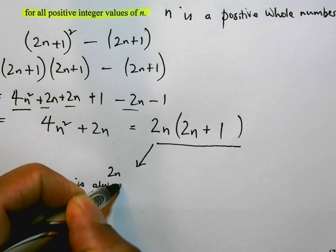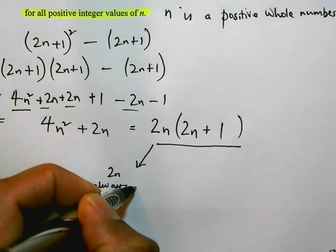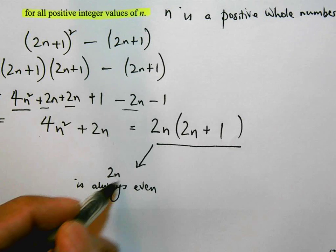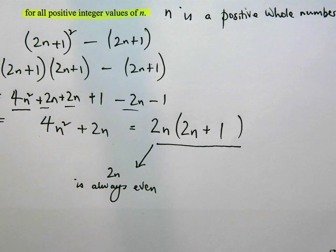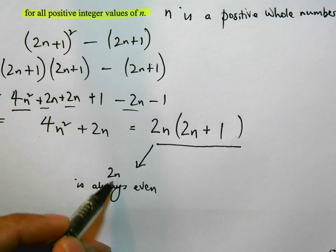It's a positive whole number. So 2n is always even, because no matter what n is, if n is any number, 2 times that number is going to give you an even number. Basically that's all the numbers in the 2 times tables.